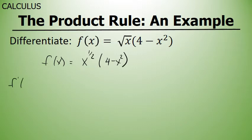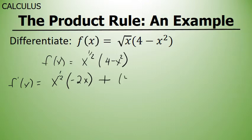Applying the product rule, which is the first factor unchanged times the derivative of the second factor, yields x to the 1 half times negative 2x, plus the second factor unchanged, 4 minus x squared, times the derivative of the first factor. The derivative of x to the 1 half, using the power rule, is 1 half x to the power of negative 1 half.